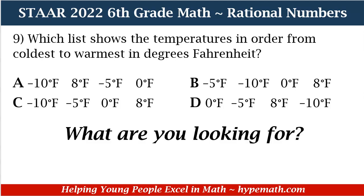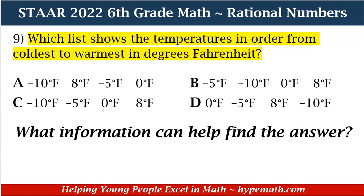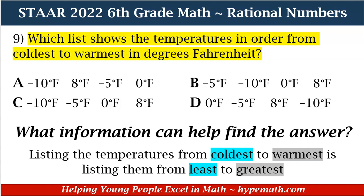Our most important question is: what are we looking for? We are looking for the list that shows the temperatures in order from coldest to warmest in degrees Fahrenheit. Now that we know what we're looking for, the next question is: what information can help us find the answer? Well, how are we listing the temperatures from coldest to warmest? Because it doesn't say least to greatest.